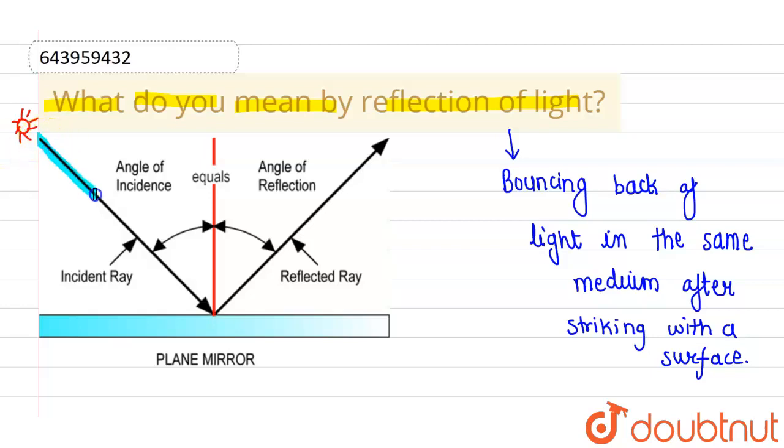So let this is one of the rays which is emerging out from this particular source. And this ray is known as incident ray, and this is the direction of incident ray.